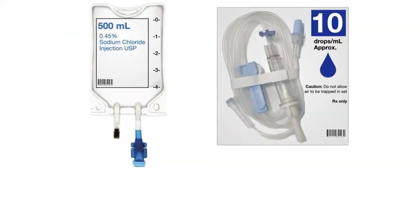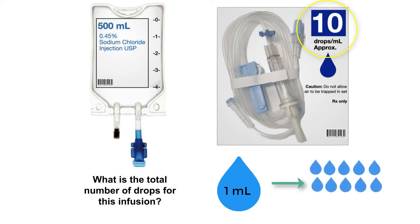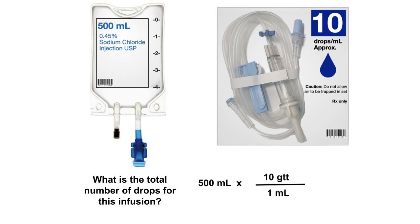Let's consider this 500 mL IV bag. Suppose this bag is ordered to infuse with the tubing that is provided. In order to calculate the infusion rate, we might first want to consider the total number of drops that will infuse. The tubing provided has a drop factor, or calibration, of 10 drops per mL, which means that each of the 500 mLs in this bag will be broken into 10 drops. So, writing this out, the 500 mL is multiplied by 10, since each mL becomes 10 drops. 500 times 10 is 5,000. This means this 500 mL bag is equivalent to 5,000 drops using the tubing that is provided.